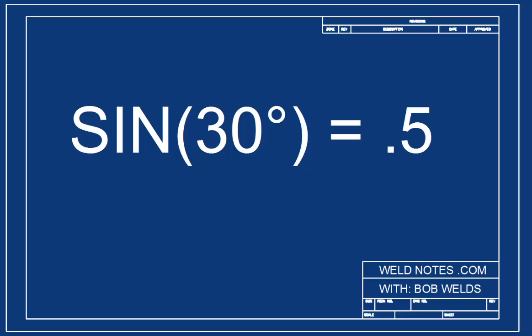The sine of 30 degrees is 4 divided by 8. 4 divided by 8 reduces to 1 half. Again, the sine of 30 degrees is 1 half, or 0.5. You see, it doesn't matter how big the triangle is, 30 degrees always has a sine of 0.5.